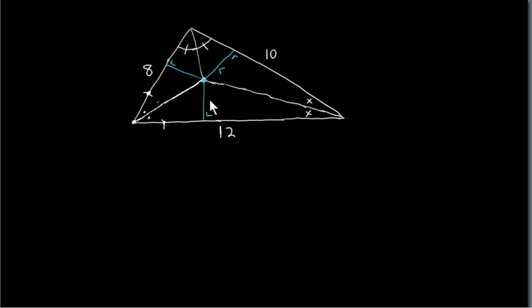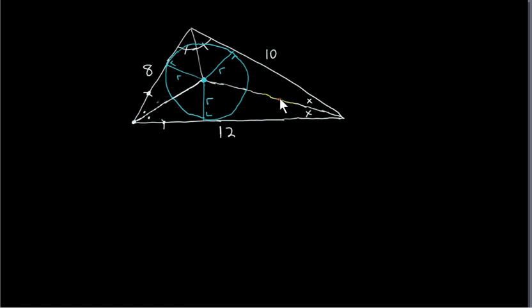So this is the radius of the circle. Now, why is this point the in-center of the triangle? The in-center means the center of the in-circle. Well, if you take any line that bisects an angle and pick a point on it, you can prove that the perpendicular distance of this point to either arm of the angle is the same.